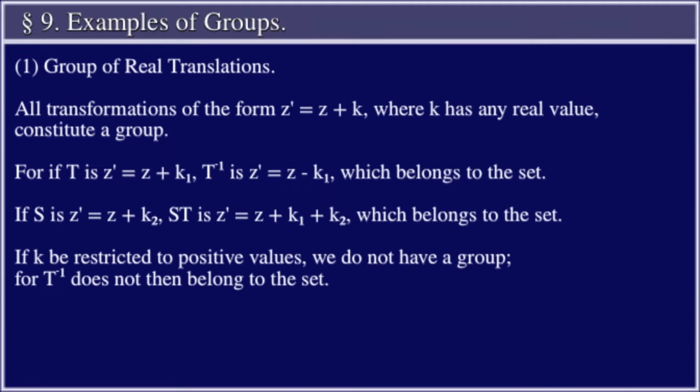1. Group of Real Translations. All transformations of the form z' = z + k, where k has any real value, constitute a group. For if T is z' = z + k₁, T⁻¹ is z' = z - k₁, which belongs to the set.